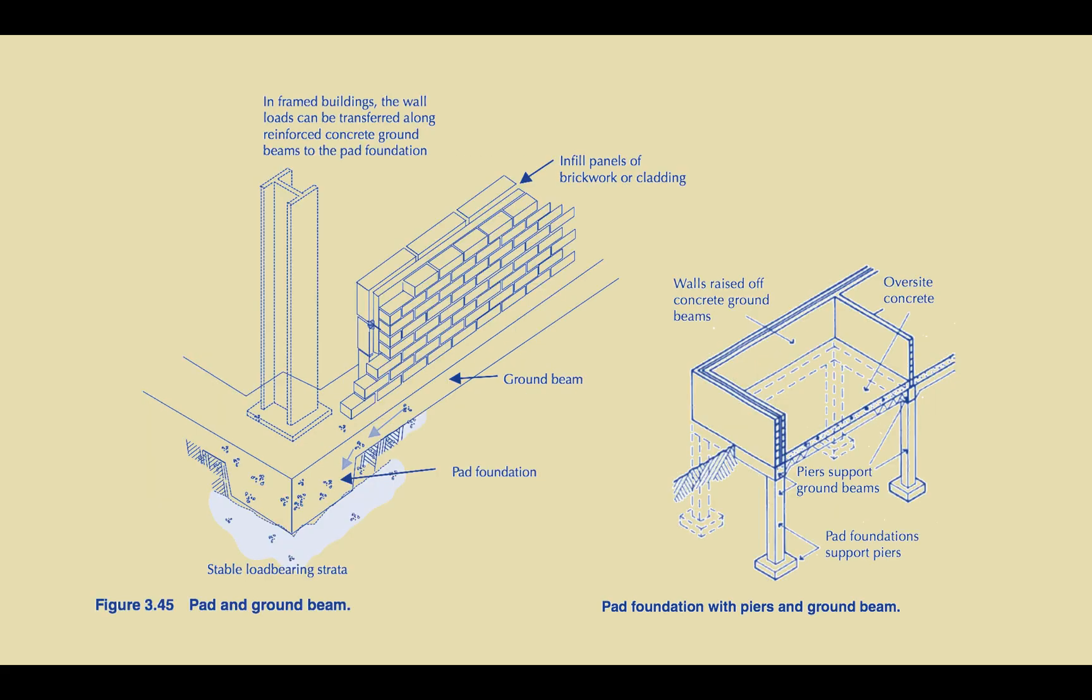The pad foundation would work alongside a ground beam to ensure that the wall is also supported in addition to the column which will be carrying most of the weight for the building. In that sense, a pad foundation can be seen as a combination of the pad and the ground beam.